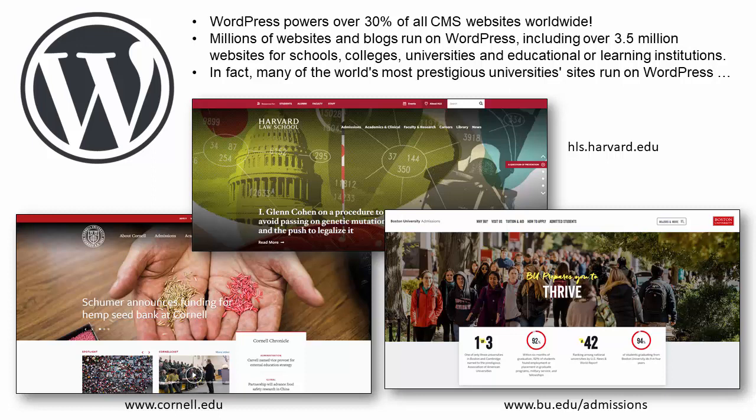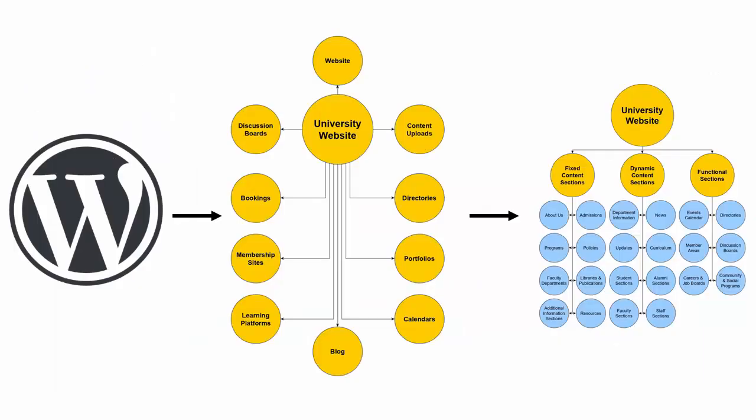Many of the world's most prestigious university sites run on WordPress, including Harvard Law School, Cornell University, MIT, Duke, Vanderbilt University, the University of Berlin, Georgetown University, the University of Texas, and almost 50,000 other institutions of higher education. Because WordPress is an open source software platform, it allows sites to be set up that are extremely versatile, completely flexible, highly scalable, and very cost effective.